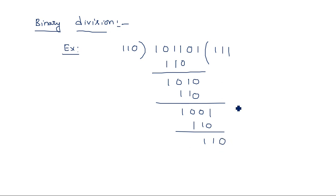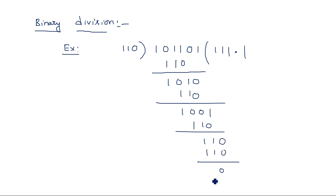Bring down 0, giving remainder 1 1 0. Add a decimal point and bring down 0. Divide 1 1 0 by 1 1 0 once more — remainder is 0 0 0. So when dividing 1 0 1 1 0 1 by 1 1 0, the result is 1 1 1 dot 1.